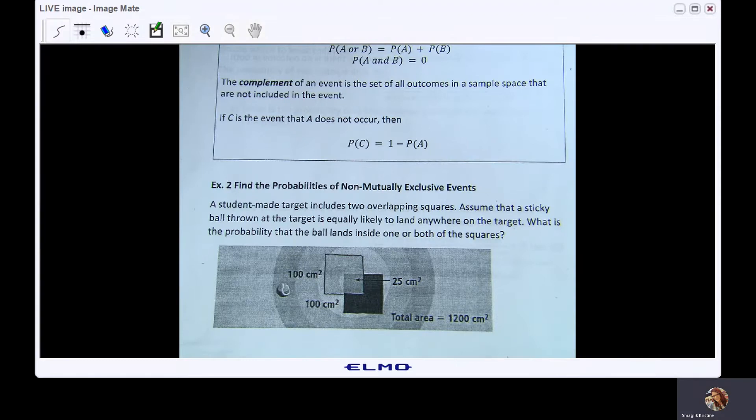In example one we took a look at mutually exclusive events, and those are events that do not share outcomes. So now let's take a look at non-mutually exclusive events where outcomes are shared.